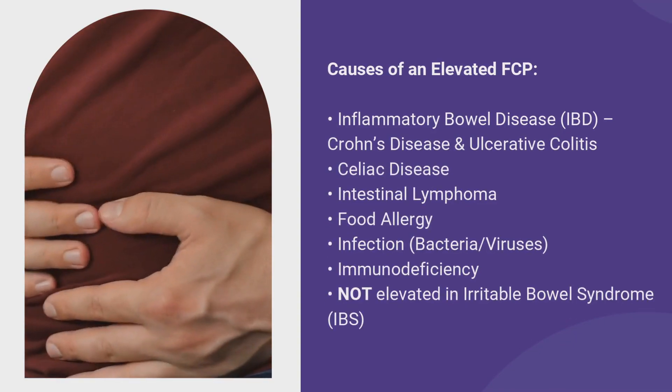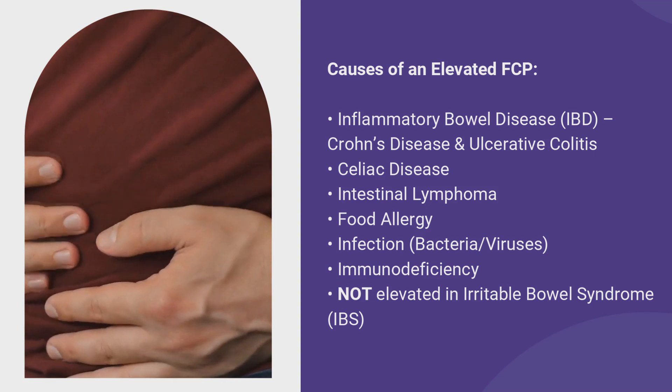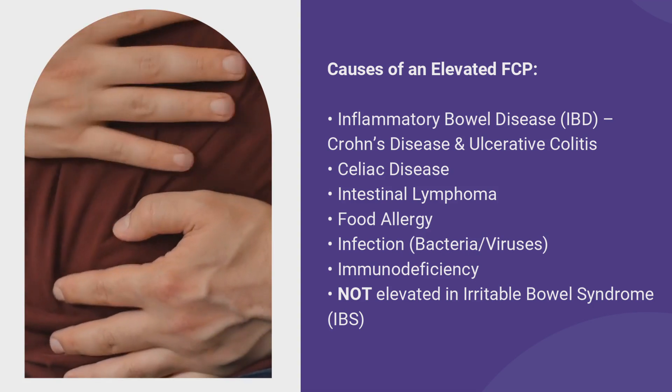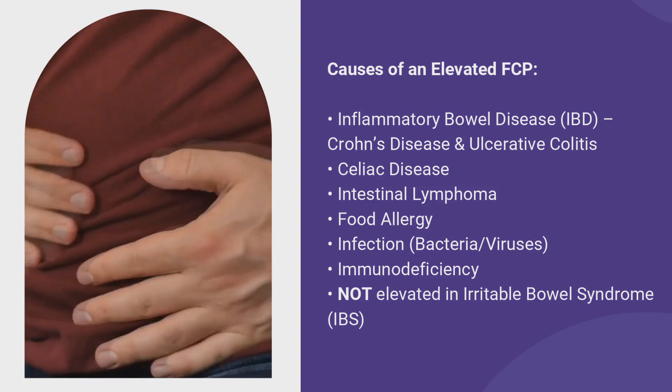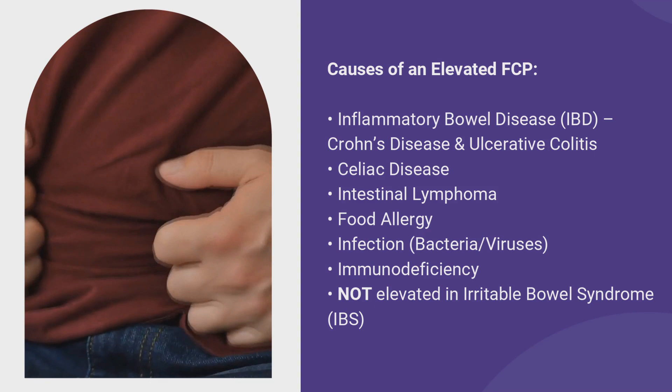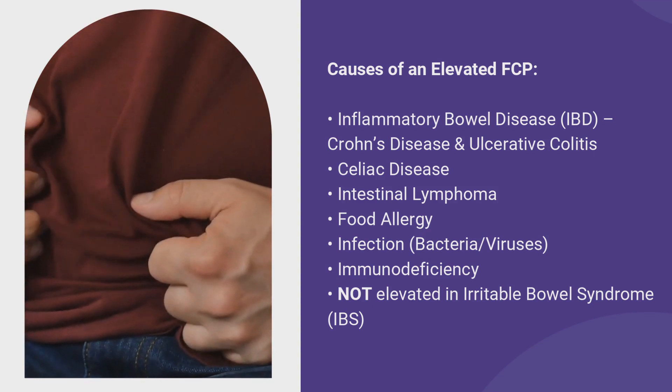Fecal calprotectin can be elevated in a number of conditions — not just inflammatory bowel disease like Crohn's and colitis, but also in celiac disease, lymphoma, and food allergies. Importantly, it is not elevated in irritable bowel syndrome, and so it is sometimes used to distinguish between IBD and IBS, because patients with IBD can also have IBS, and this test helps figure out which we're treating.